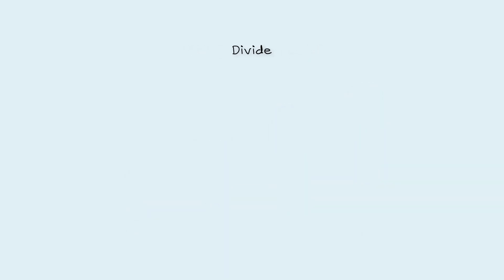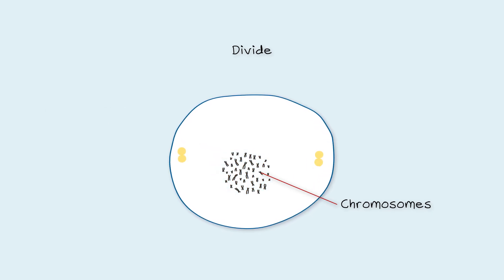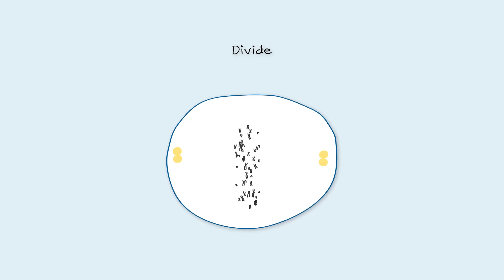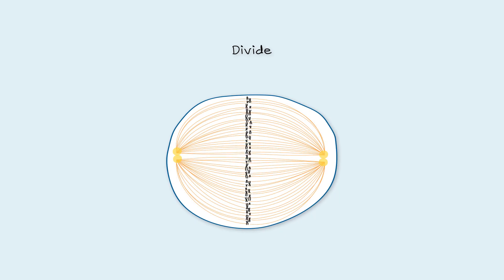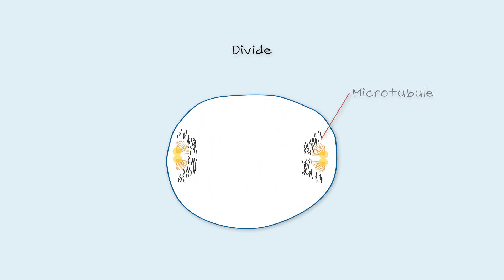When cells divide, they make an exact copy of themselves. First, the DNA separates into separate chromosomes. The nuclear membrane disappears and a copy of each chromosome, as well as the centromeres, is made. The chromosomes then line up in the middle of the cell and one copy of each chromosome is pulled by a microtubule to opposite sides of the cell.